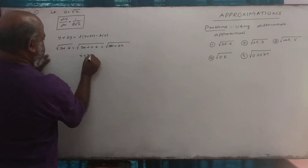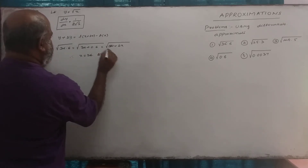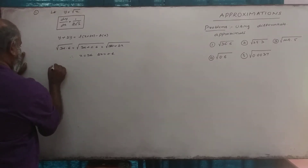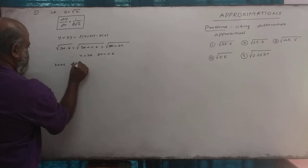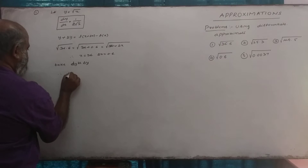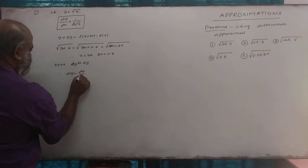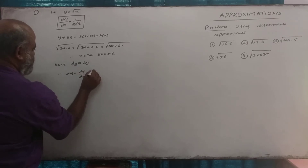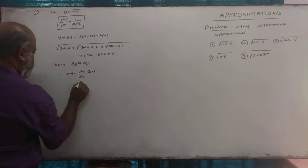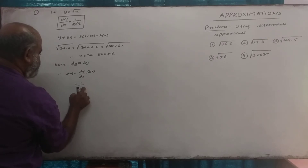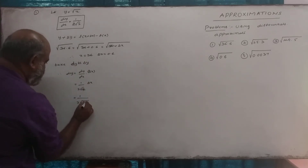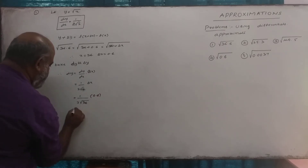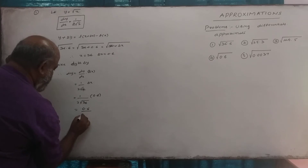Here, x is equal to 36 and delta x is 0.6. Since dy is approximately equal to delta y, we have dy by dx into dx, which gives us 0.6 divided by 2 into 6.